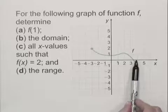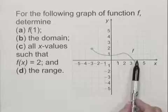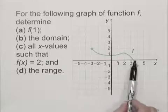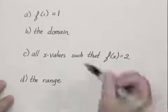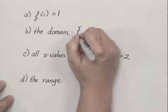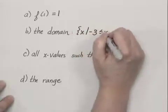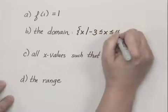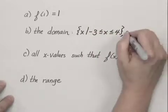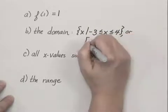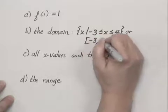So the set of all values in the graph, x values in the graph, extends from negative 3 to 4. So the domain is the set of all x such that negative 3 is less than or equal to x, and x is less than or equal to 4. Or, in interval notation, the interval from negative 3 to 4.